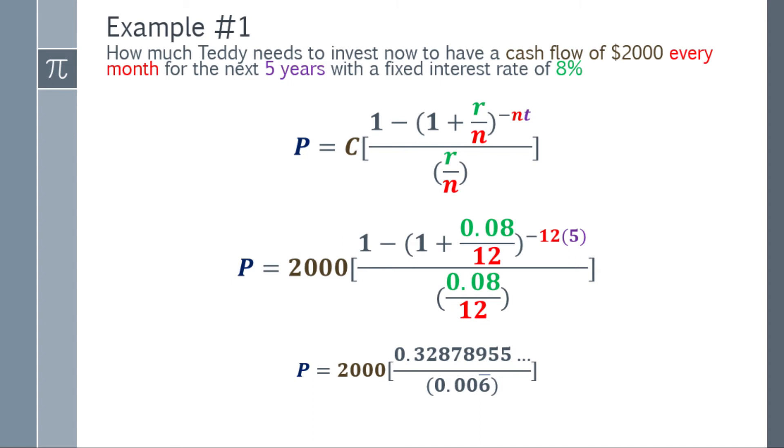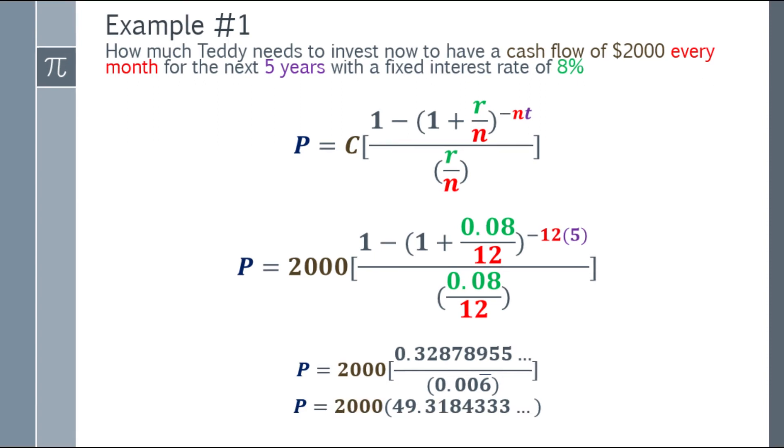The denominator part will be 0.006 repeating decimal. Next step, divide the numerator by the denominator. The 0.32 something divided by 0.006 repeating gives 49.3184333 and so on.